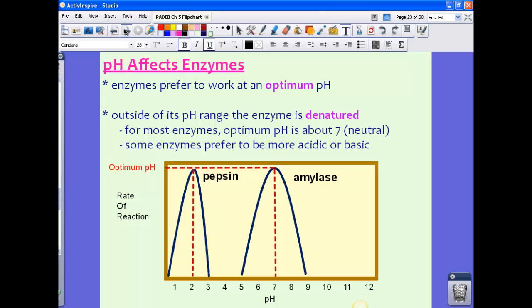Now for most enzymes, the optimum pH is about 7, which is neutral. It's neither alkaline, basic, or acidic. So it's sort of kind of in the middle. And if you see this, again, we have another chart here, another graph.